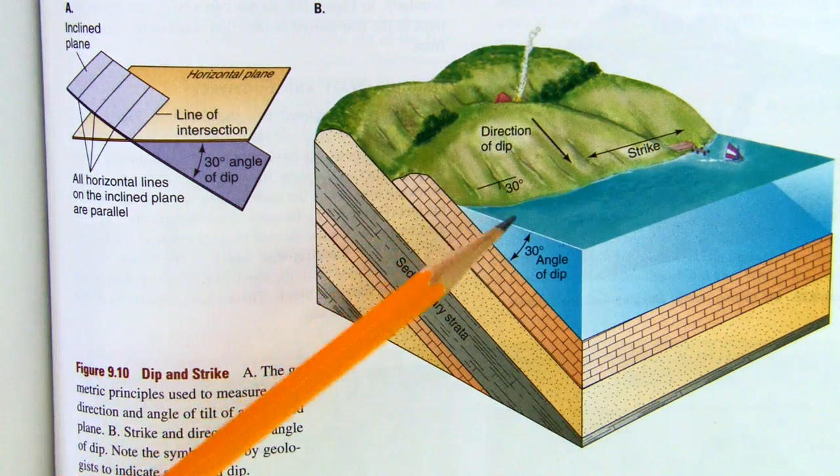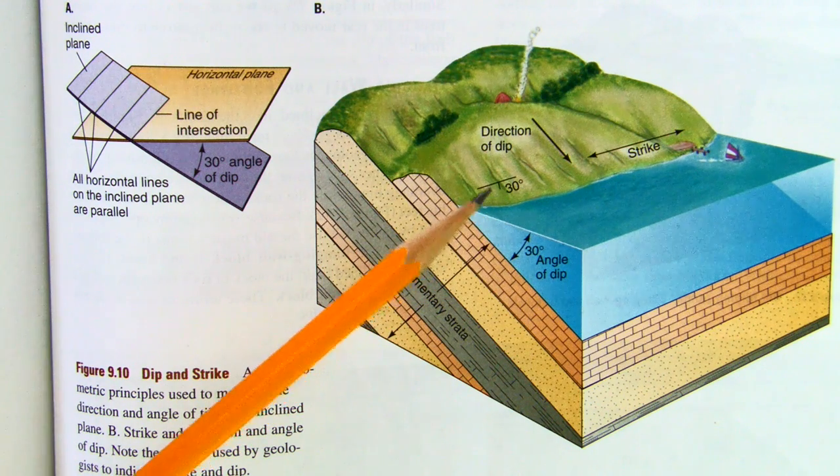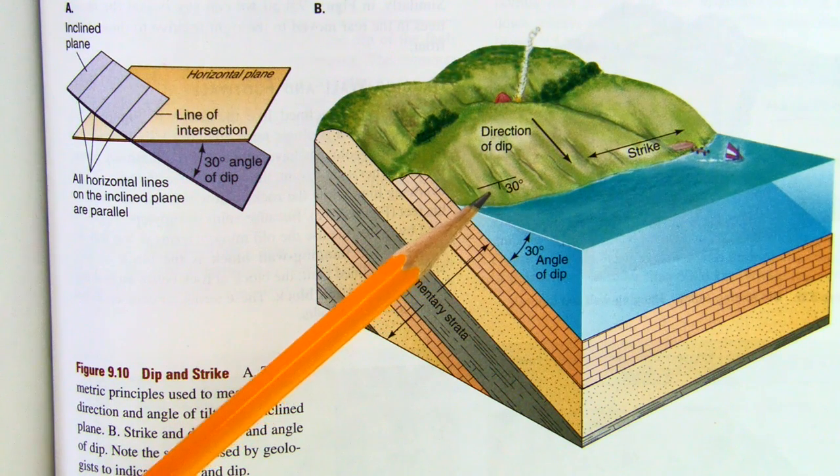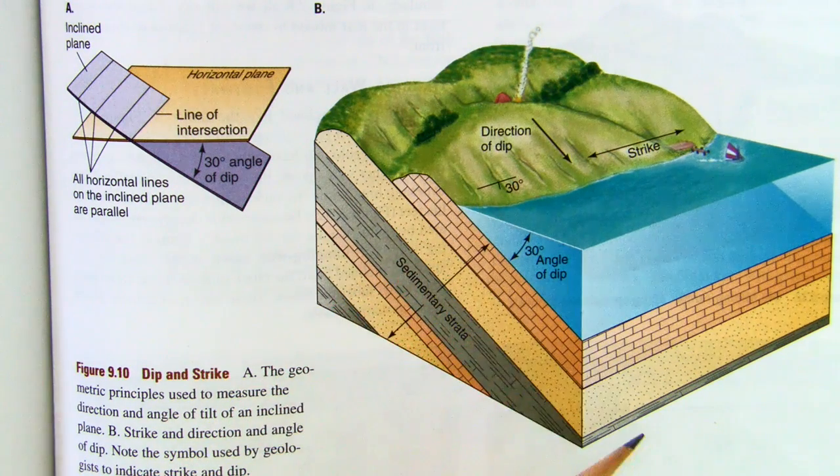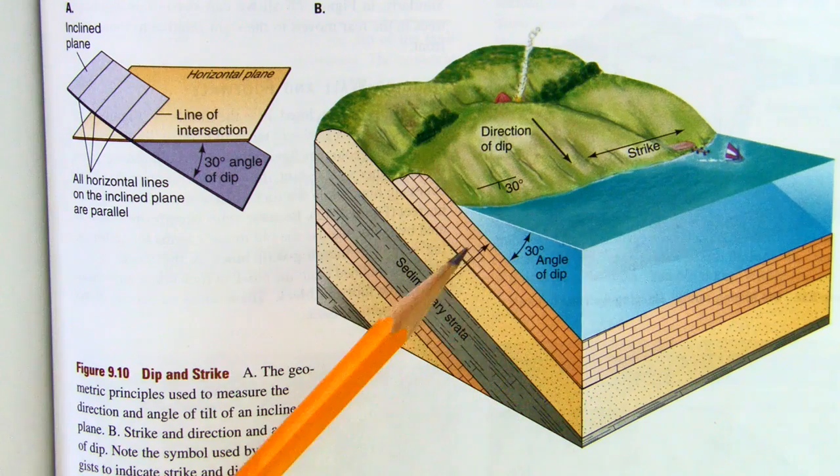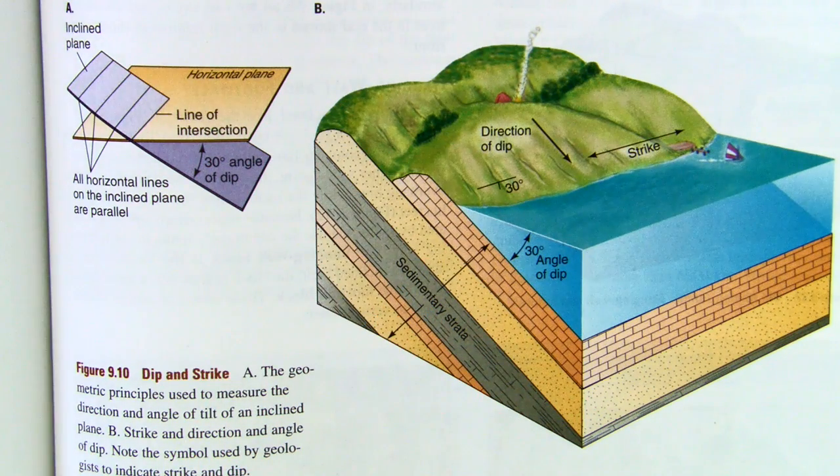So here is our strike and dip symbol. The dip is 90 degrees to the strike and it's going down dip, down this way. And sometimes you'll see the 30 degrees written, in some cases you don't.